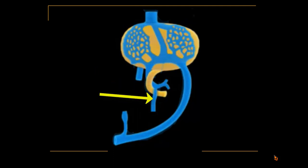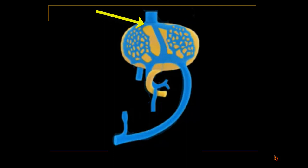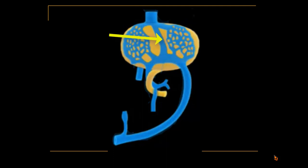The vitelline veins below the level of the liver will form the portal vein, the splenic vein, and the superior mesenteric vein. Inside the liver they form the hepatic sinusoids, which terminate into the hepatic veins emptying into the inferior vena cava. The ductus venosus communicates the left umbilical vein to the inferior vena cava.